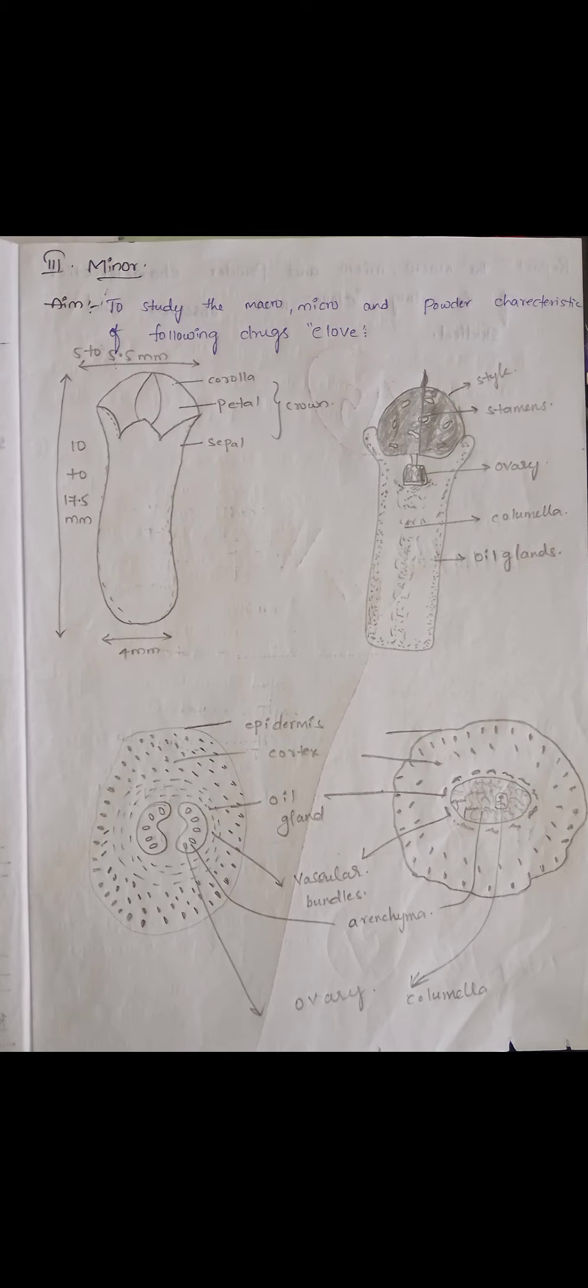And what are the parts which have been written here, like ovary, oil glands, columella, and all the other internal parts, those have to come in broken pieces. That is missing here. That is a completely wrong answer.